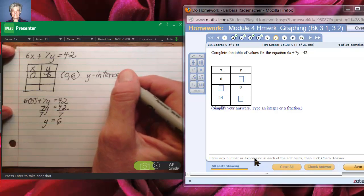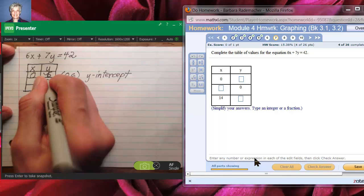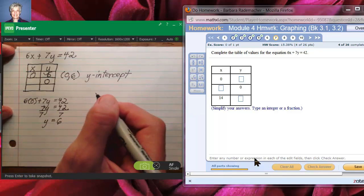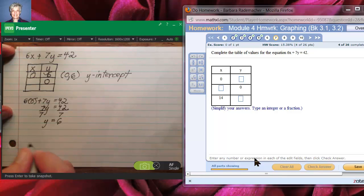For the next point we're told that the y coordinate is 0 and we're being asked to find the x coordinate. So we're going to have 6x plus 7 times 0 equals 42. 7 times 0 is 0 so we'll have 6x equals 42 then divide by 6 and divide by 6 and what do you get? You get x equals 7.